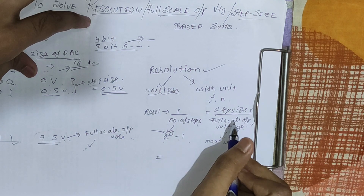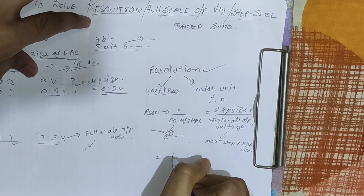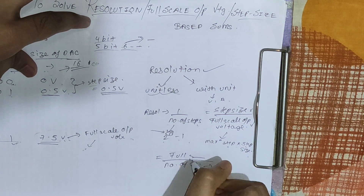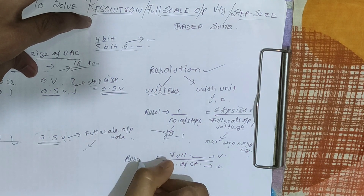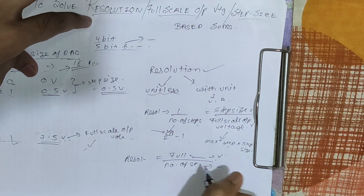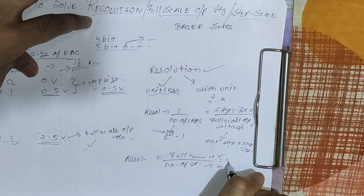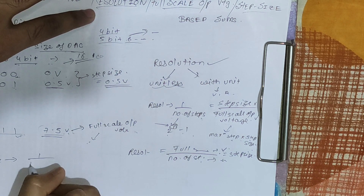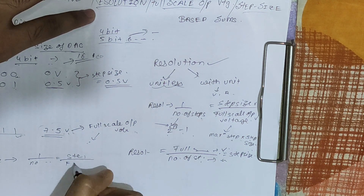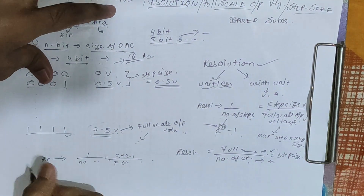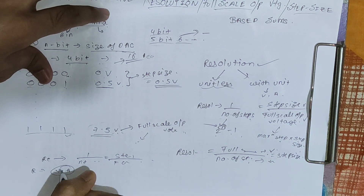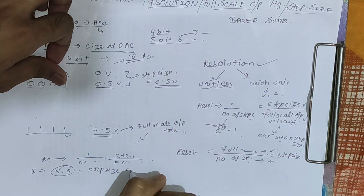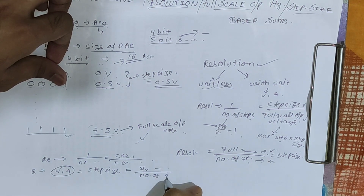If we take full-scale output voltage and rearrange the formula, we get: full-scale output voltage upon number of steps. Number of steps has no unit and full-scale output voltage is in volts, so resolution can also be expressed in volts. The formula for resolution with unit will be full-scale output voltage upon number of steps, which equals step size. So resolution can be unit-less — formula: 1 upon number of steps equals step size upon full-scale output voltage — or with unit (volts or amperes depending on the output), in which case resolution equals step size.